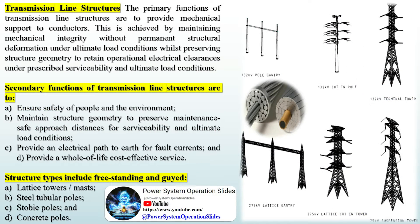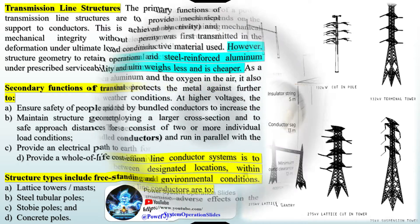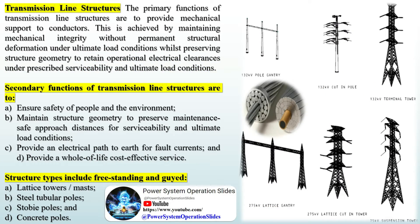Transmission line structures: the primary functions of transmission line structures are to provide mechanical support to conductors. This is achieved by maintaining mechanical integrity without permanent structural deformation under ultimate load conditions, whilst preserving structure geometry to retain operational electrical clearances under prescribed serviceability and ultimate load conditions. Secondary functions of transmission line structures are to ensure safety of people and the environment, and to maintain structure geometry to preserve maintenance-safe approach distances for serviceability and ultimate load conditions.